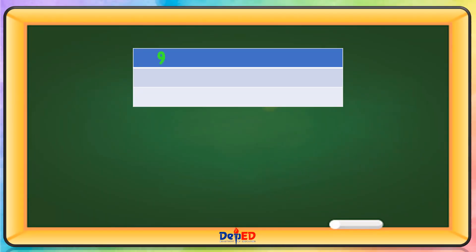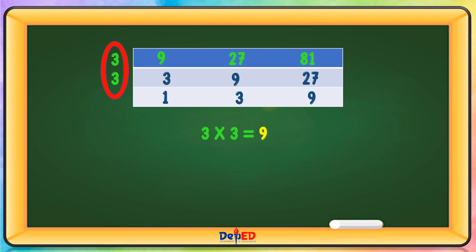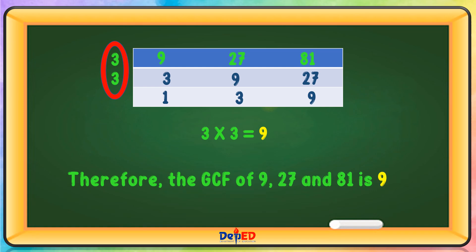Next: 9, 27, 81. Using prime number 3: 9 divided by 3 equals 3, 27 divided by 3 equals 9, 81 divided by 3 equals 27. Using prime number 3 again: 3 divided by 3 equals 1, 9 divided by 3 equals 3, 27 divided by 3 equals 9. Multiply the prime numbers: 3 times 3 equals 9. Therefore, the GCF of 9, 27, and 81 is 9.